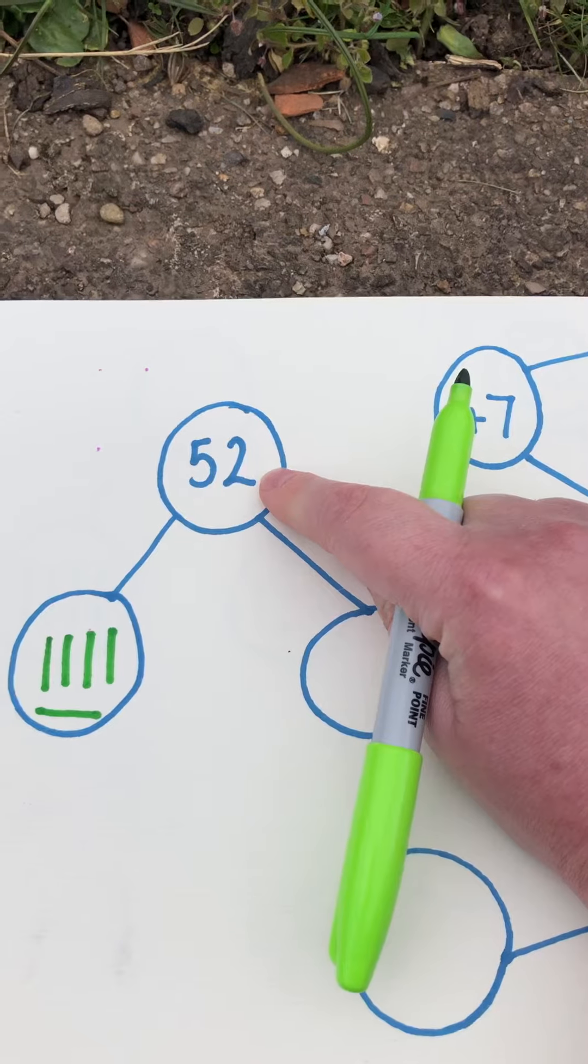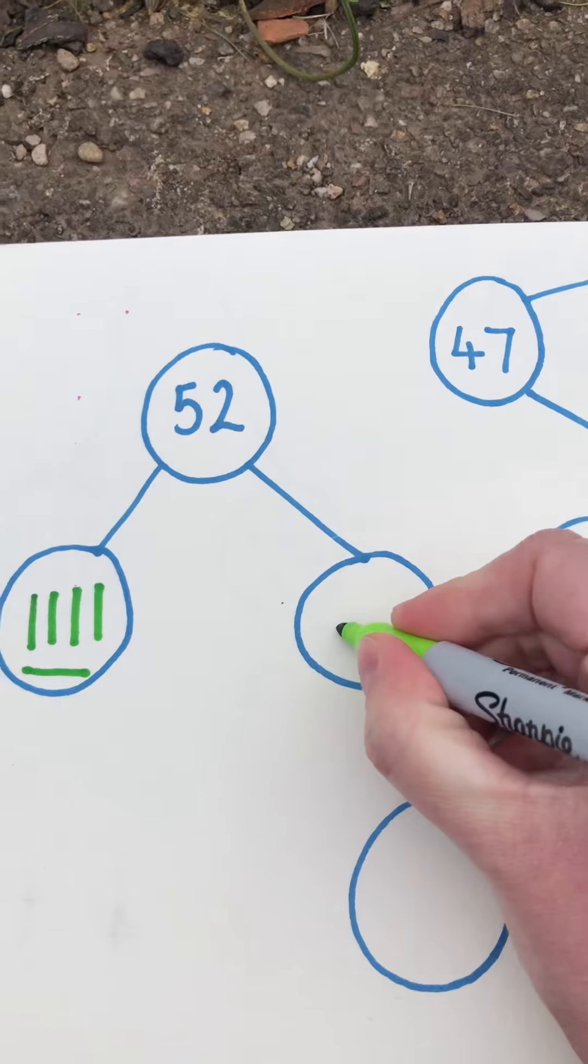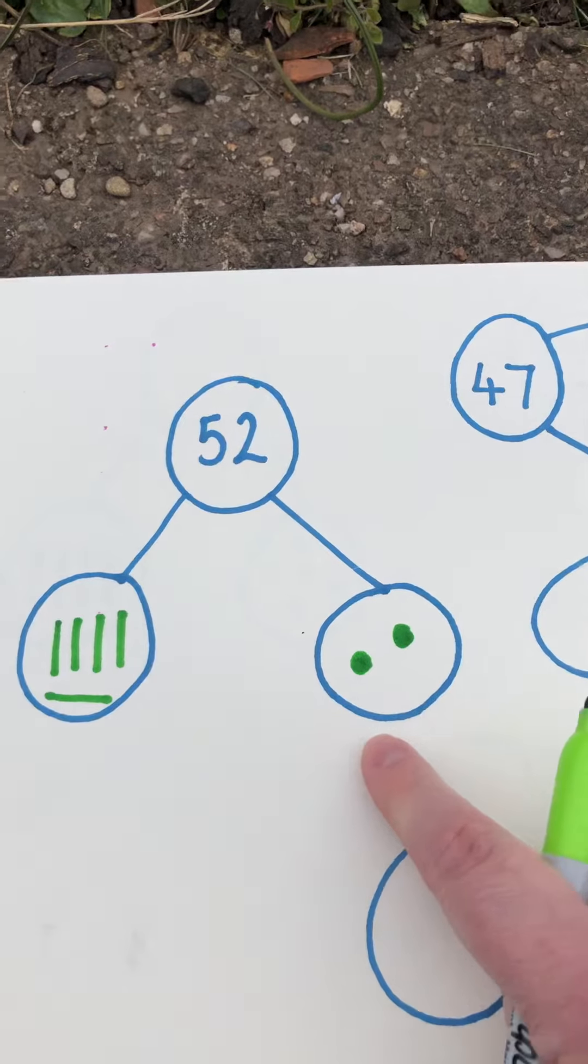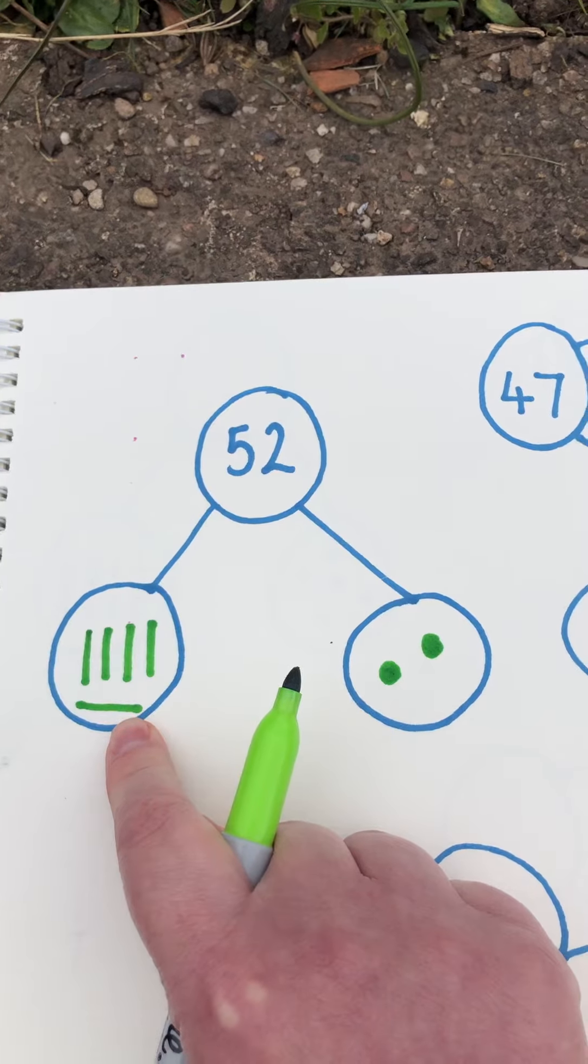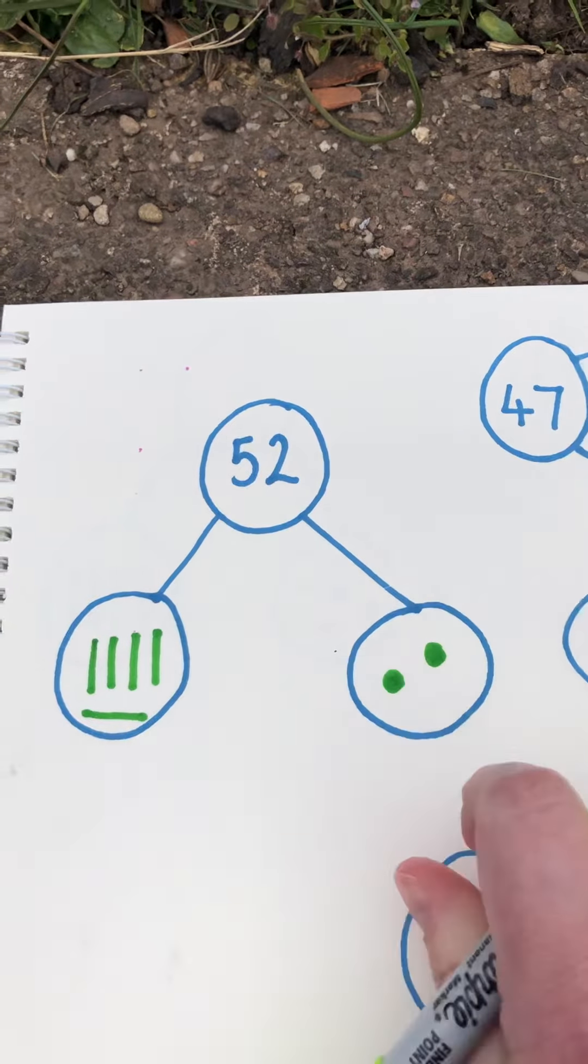How many 1's are there? 2. So in here, I'm going to represent the number using objects. So straight away, I can see that there are 5 tens in the number 52, and there are 2 ones in the number 52.